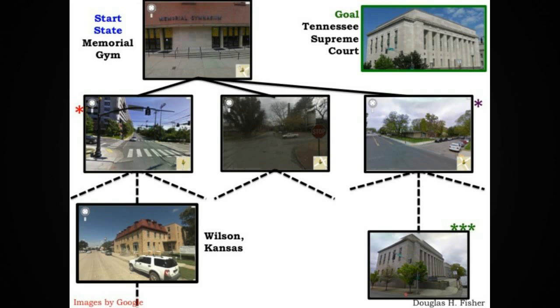Let's abstract a bit and show this as a search space. The start state is Memorial Gym at the top. The three possible endpoints we can get from taking the three possible actions out of Memorial Gym are shown as children. You may know something like a depth-first uninformed search. We could take the node through Jess Neely and explore the descendants of that node. It would turn out we'd be going in the wrong direction, though our blind search algorithm would have no way of knowing it. One possible node you could end up deep in the search space would be, say, Wilson, Kansas — a nice little town, but nowhere near the final goal.